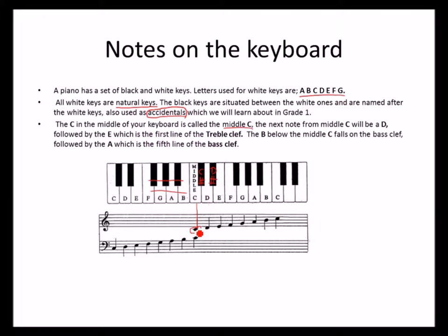The ledger lines are lines and spaces below or above the staff. E is on the space, E is on the first line of the staff, F on the first space of the staff, then G on the second line of the staff — which is the treble clef. The treble clef sits on the treble clef. A is on the space, B is on the line, C on the space.